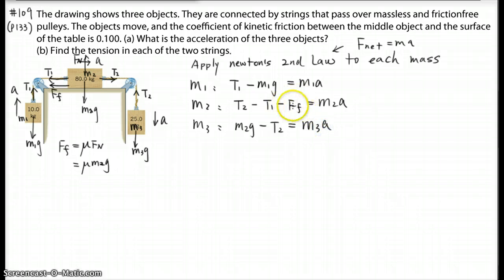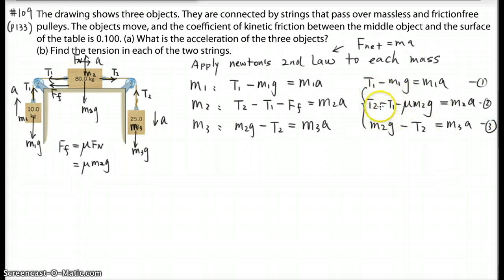So if we replace the FF with mu M2G, so we have three equations. And we can add up, so we just do one more step. So this one is still the same, T1 minus M1G equals M1A. This is T2 minus T1 minus mu M2G equals M2A. And M3G minus M3A. So here you go, we have three equations, one, two, three, that's enough for us to solve the three variables T1, T2, and A.